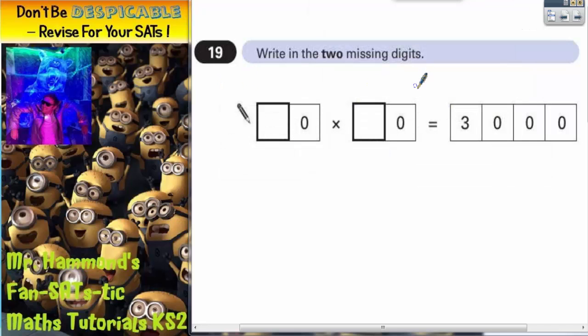Question 19. Writing the two missing digits. Now this one's actually a lot easier than it looked.